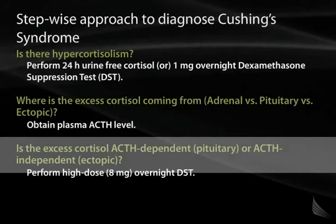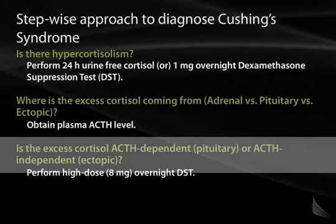The final step is to distinguish between a pituitary versus ectopic source. For this you perform a high-dose dexamethasone suppression test — unlike the low-dose test using 1 mg, the high-dose uses 8 mg of dexamethasone. This very high level of dexamethasone is thought to suppress the HPA axis. If the source is a pituitary adenoma, the high dose should suppress plasma cortisol. If even high-dose dexamethasone cannot suppress cortisol, the cause is an ectopic source.